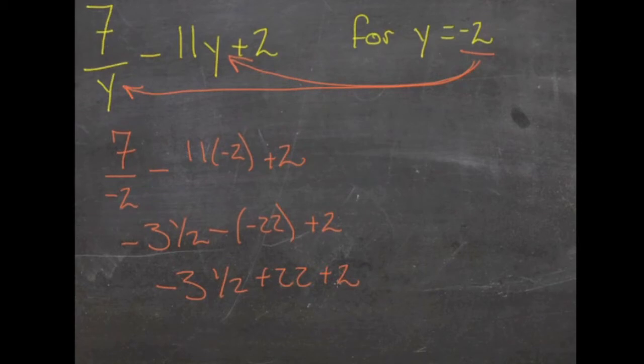And now that we have subtraction and addition, we can just go left to right. 22 plus 2 is 24, and 24 minus 3 and a half would be 20 and one half.